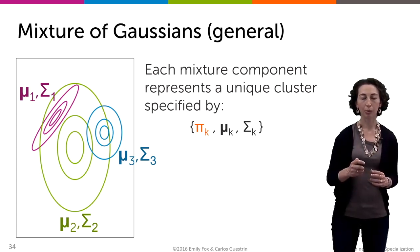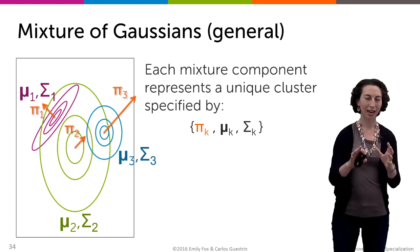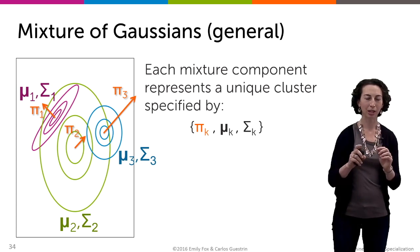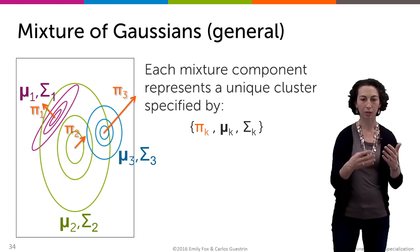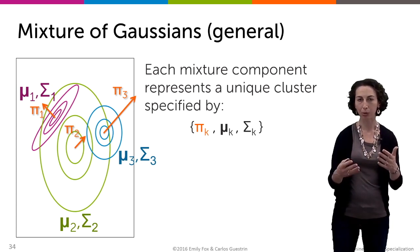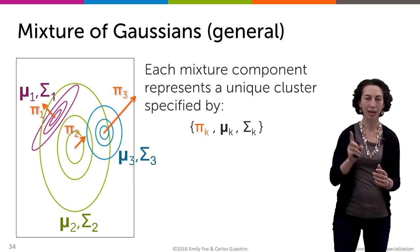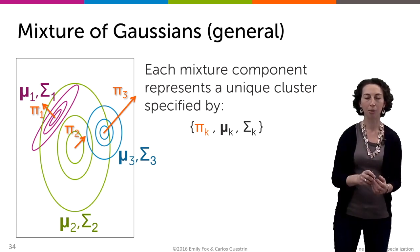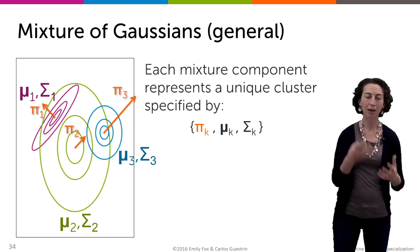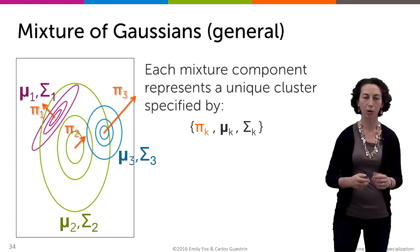When we're thinking about the mixture weights, just think of taking each one of these distributions, which are shown in these green, fuchsia, and blue colors, and then weighting them. This weight, pi_k, is coming out of the board, and that represents how much we're emphasizing each one of these different mixture components in the overall mixture.